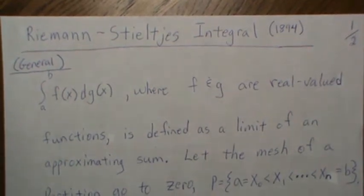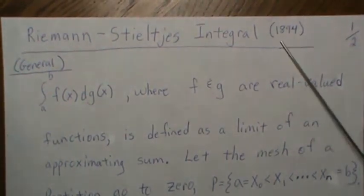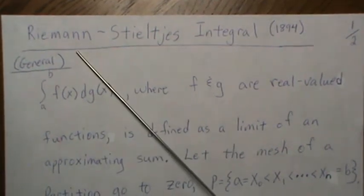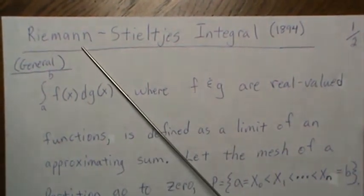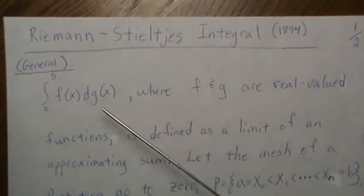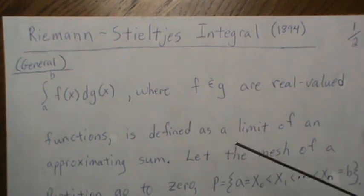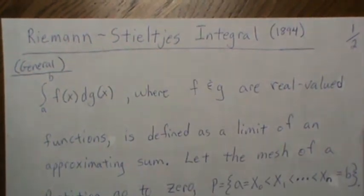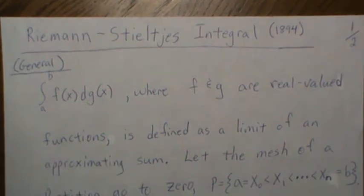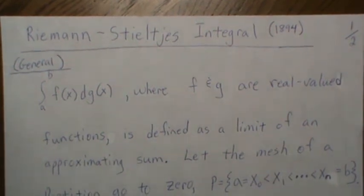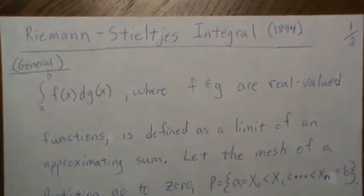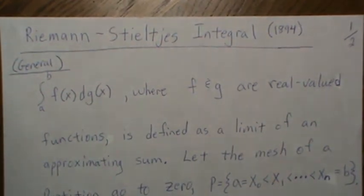Now 20 or 30 years earlier than 1894, Riemann developed his theory on integration, and then Stieltjes developed this more general approach. Within 10 years Lebesgue introduced his theory, but we're going to briefly go over what Riemann-Stieltjes integration is and why statisticians use it quite a bit.